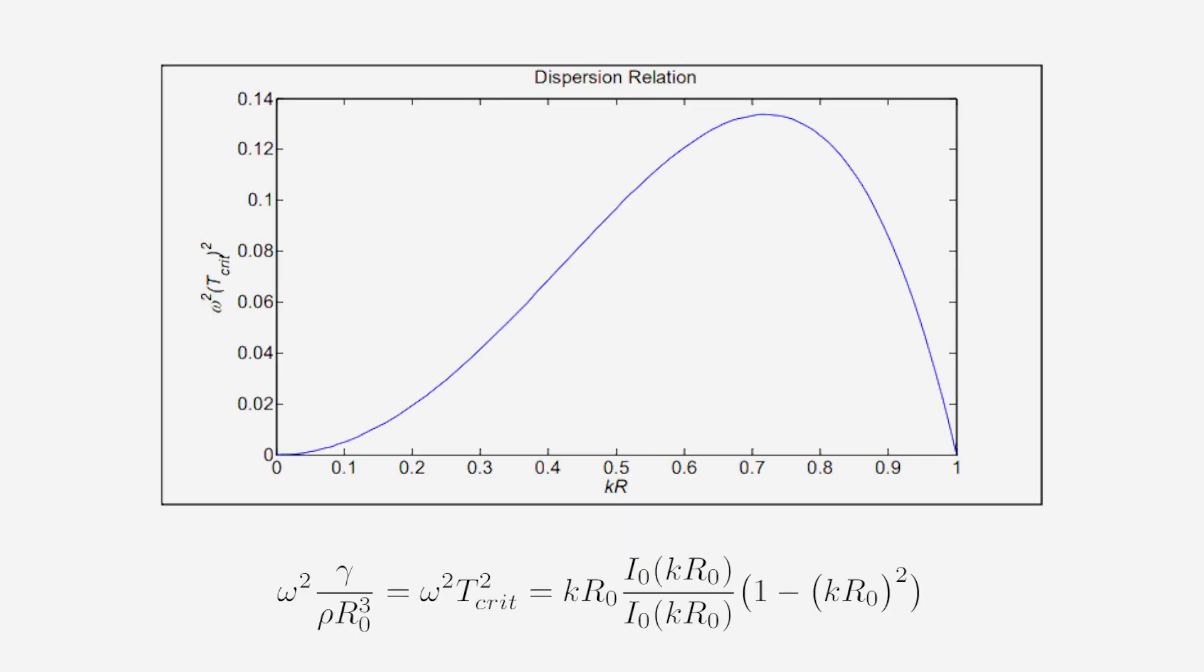Using the Navier-Stokes and Young-Laplace equations, we can determine the dispersion relation of the instability. From this, we can plot the growth rate in terms of wavenumber. It turns out that the maximum growth occurs when Kr0 equals 0.697. At the peak of this graph, all other disturbances will be overshadowed by the perturbation with this wavenumber. As a result, a constant stream of droplets will form.